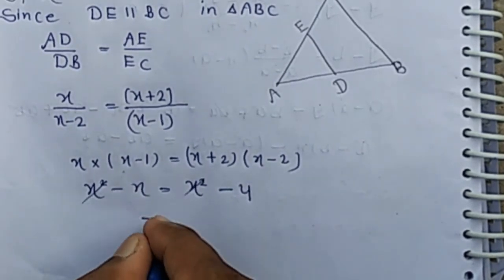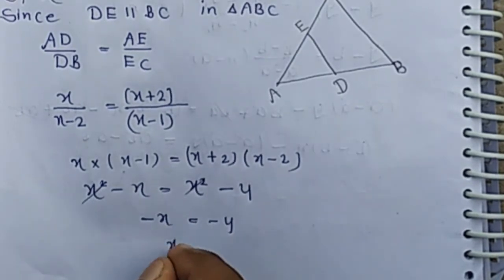X squared cancels out, we have minus X equals minus 4, so the value of X is 4.